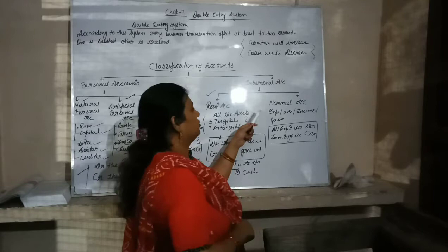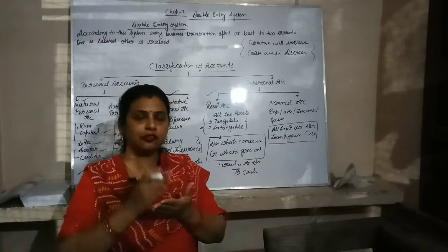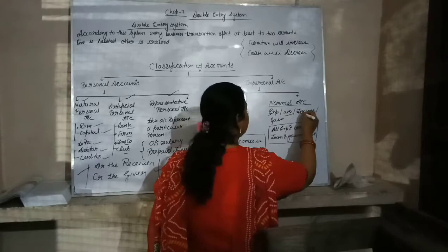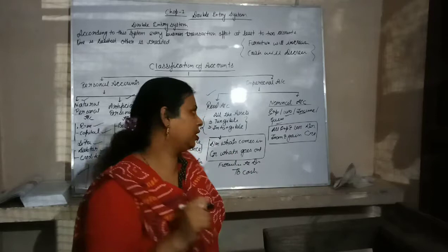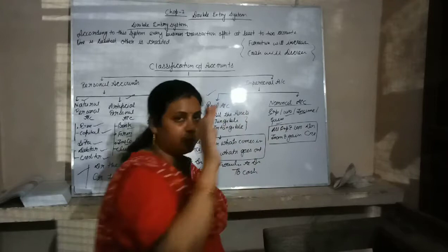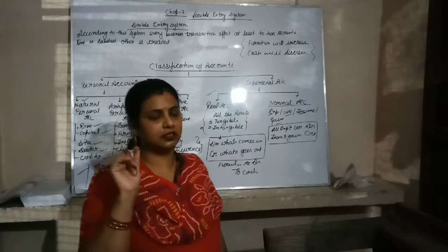The next account is nominal account. In nominal account, we record all expenses, losses, income, and gains according to the rules of nominal account. The rule of nominal account is: all expenses and losses are debited, and income and gains are credited.